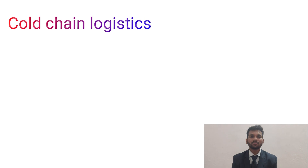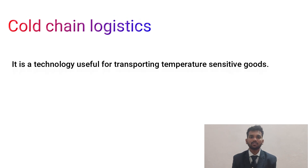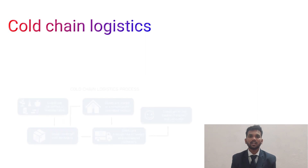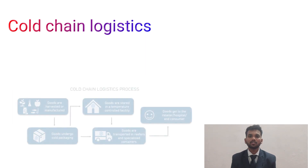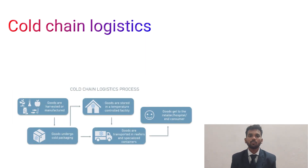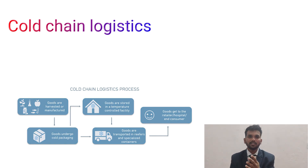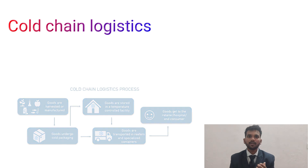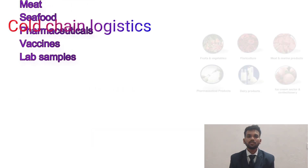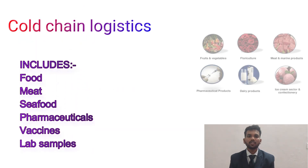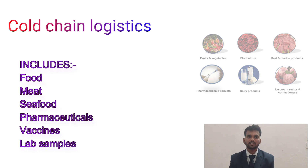Cold chain logistics is the technology and process that allows for the safe transport of temperature-sensitive goods and products along the supply chain. It relies heavily on science to evaluate and accommodate the link between temperature and perishability. Any product labeled perishable will likely need cold chain management — this could include foods like meat, seafood, and produce, as well as medical supplies and pharmaceuticals.